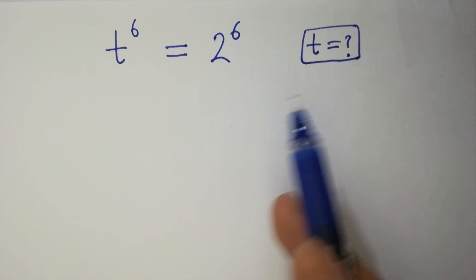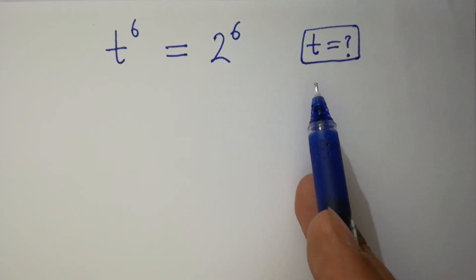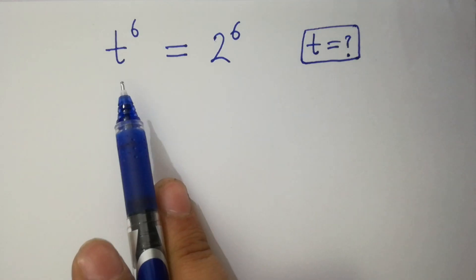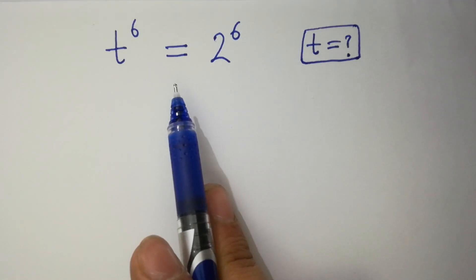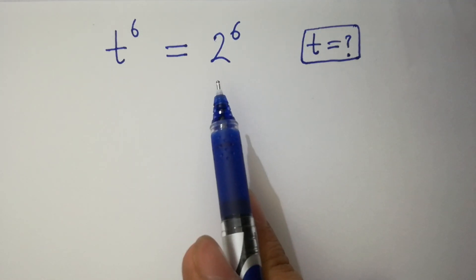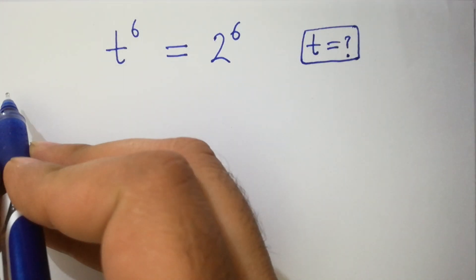Hello friends. Find the value of t if t to the power 6 equals 2 to the power 6. Let's have a solution.